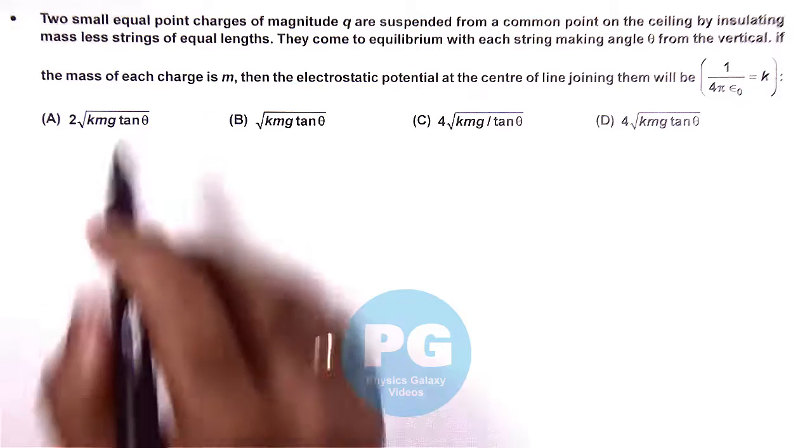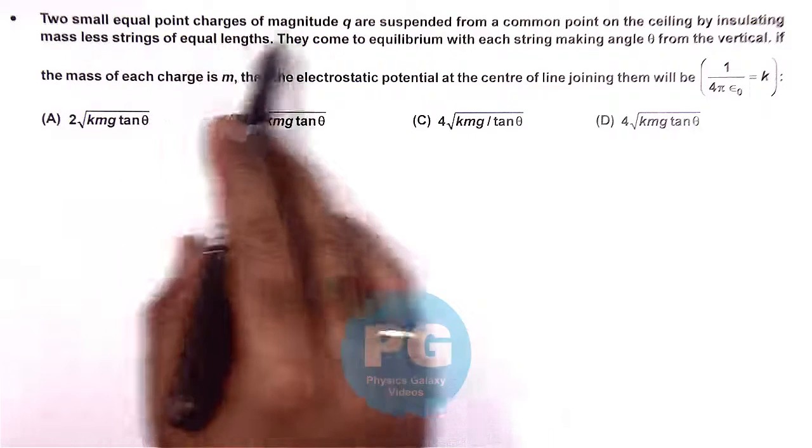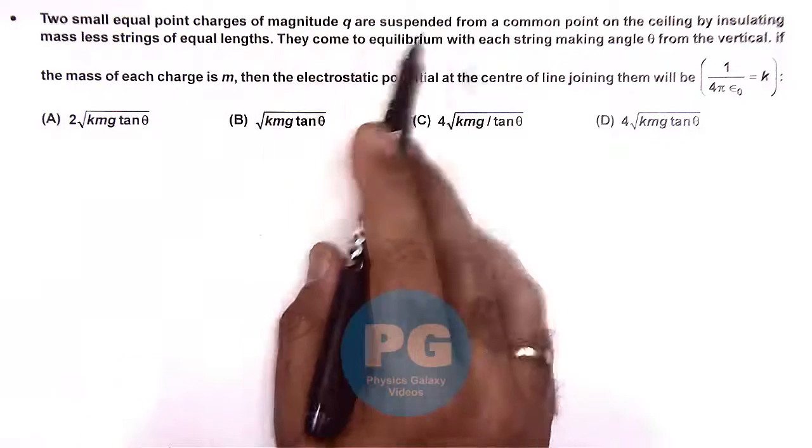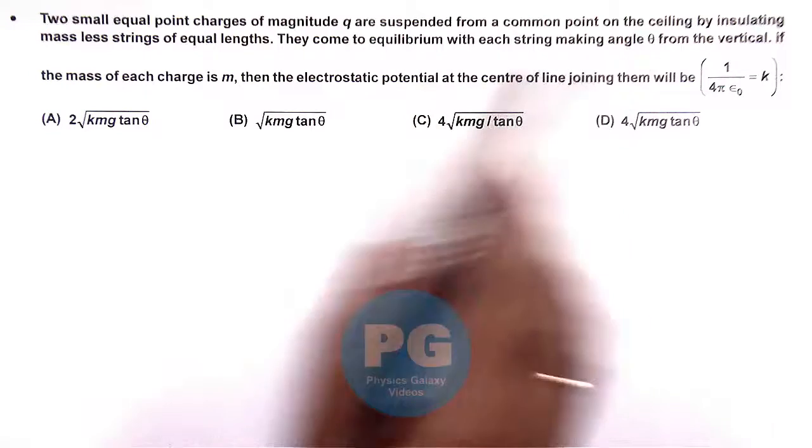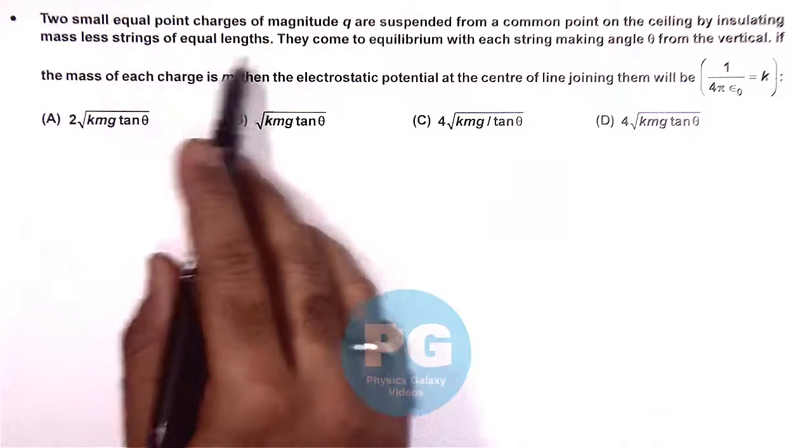In this question, we are given two small equal point charges of magnitude Q, suspended from a common point on the ceiling by insulating massless strings of equal length.